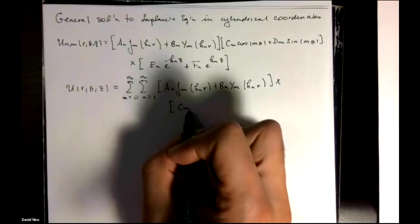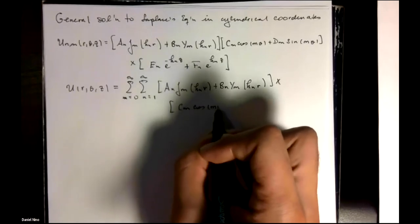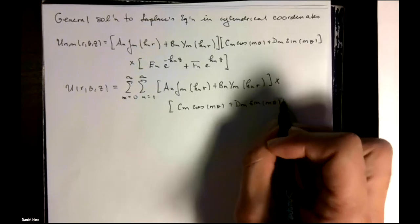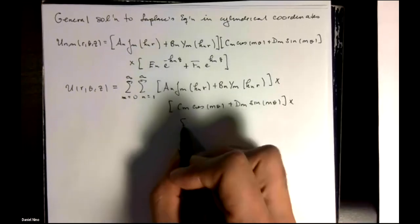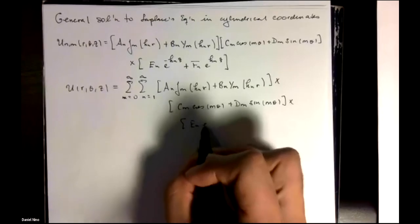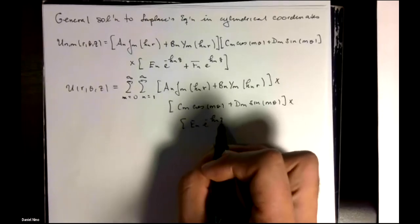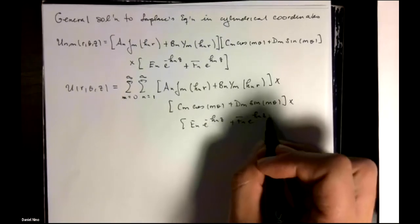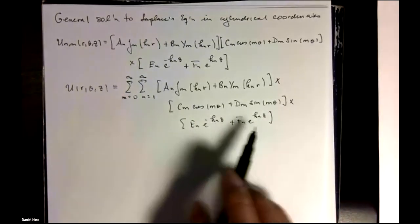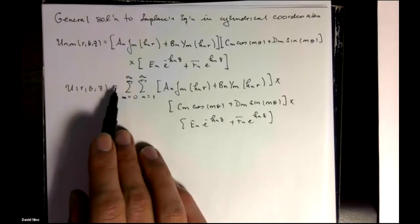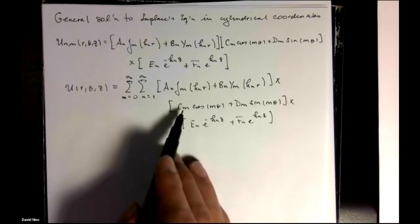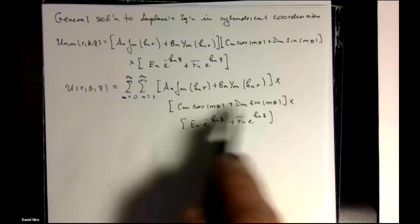And this is being multiplied by the angular component, and this is being multiplied by the axial component. Notice that in the last video we had a constant C0 over here, but we don't need to add that because our sum already starts at m is equal to 0. So that constant is already included in the angular term.